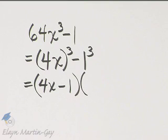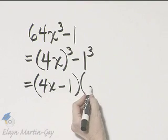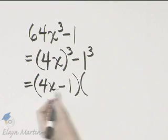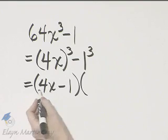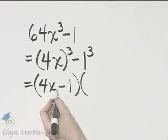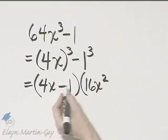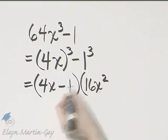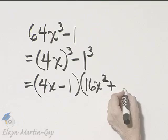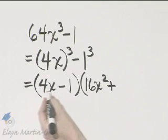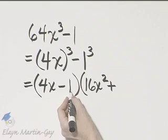And now let's write the trinomial, and it's always the same. This first term is this complete first term squared. So 4x times 4x, which is 16x squared. The sign is always the opposite of this sign, so it would be plus. The middle term is always this first 4x times the second term, 1.